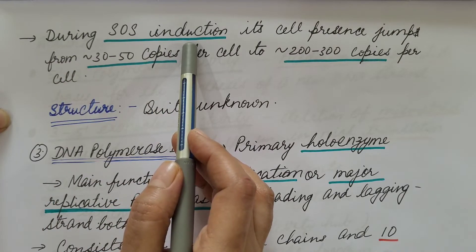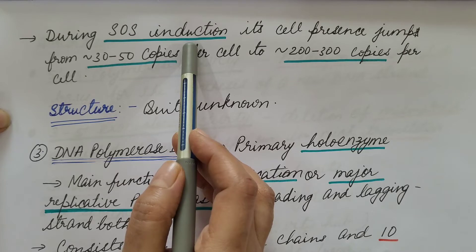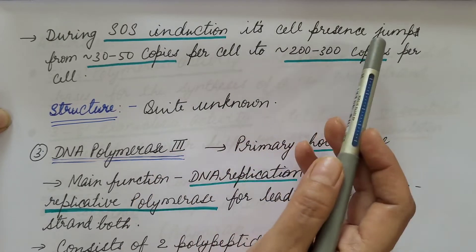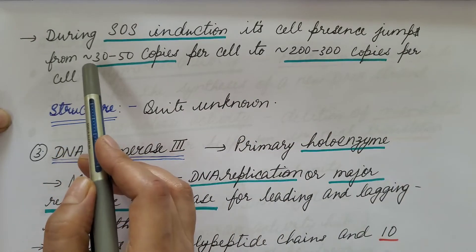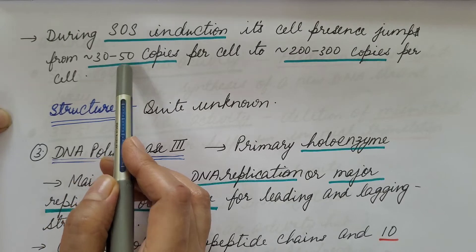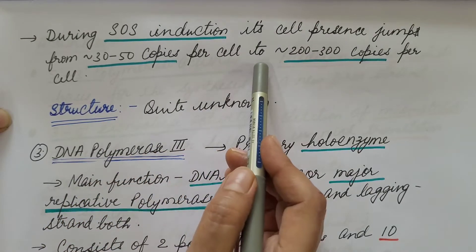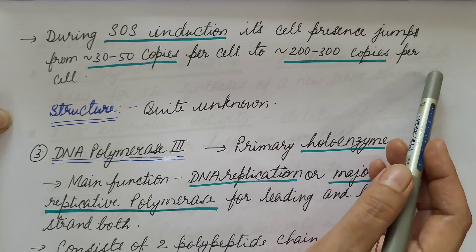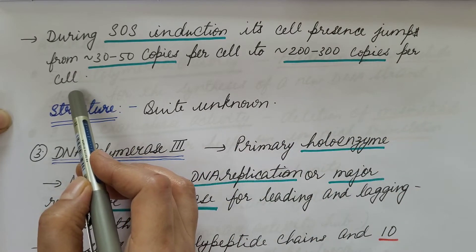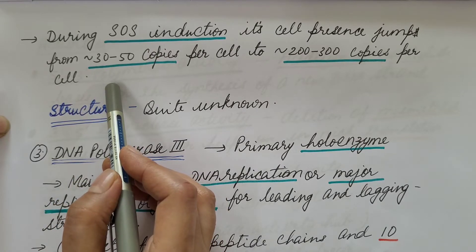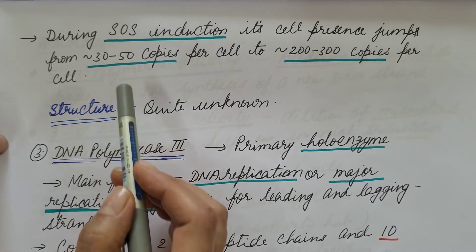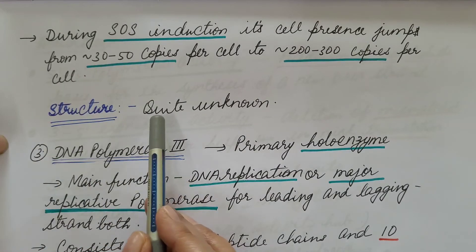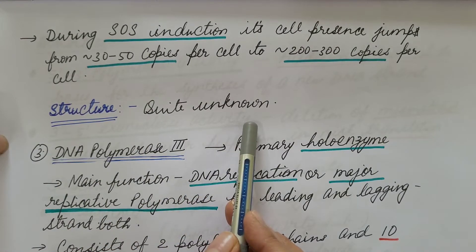During SOS induction — when mismatched bases are present or there is a nick — the cell presence of DNA polymerase 2 jumps from approximately 30–50 copies per cell to approximately 200–300 copies per cell, because its activity increases via 3'→5' exonuclease activity. Its detailed structure is largely unknown.